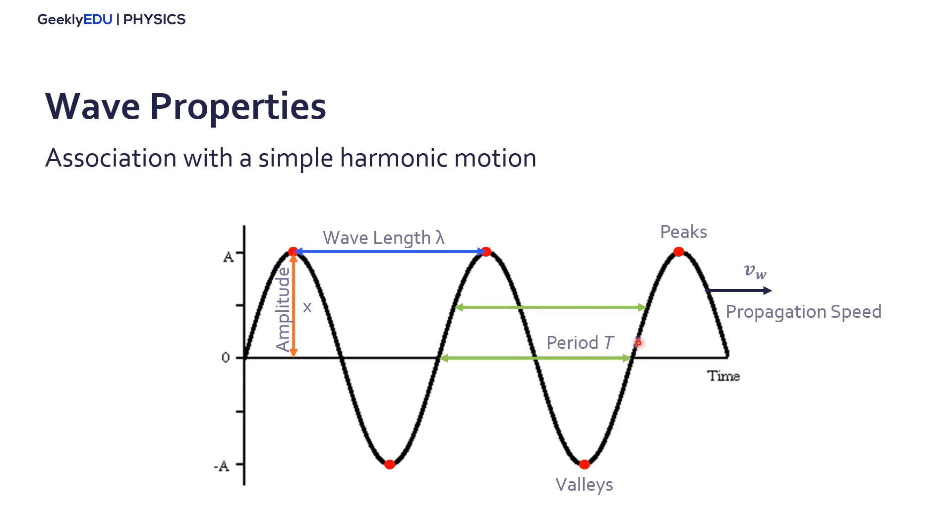And if you have a period, well, we also have a frequency, that's the inverse of the period. Now to calculate this propagation speed, we use the wavelength divided by the period, or the frequency times the wavelength, and then we have the propagation speed of a wave.